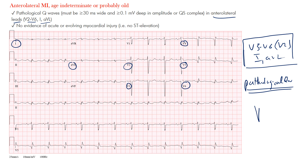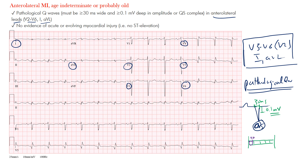We want pathological Q waves to be wide and deep. A QS complex is simply a complex that has essentially only a Q wave with no positive deflection. For depth, we use at least 0.1 millivolts, though probably deeper is more reliable. For width, at least 30 milliseconds — that's one small box on the EKG paper, since five small boxes between thick lines equals 200 milliseconds.